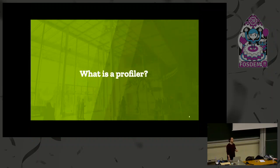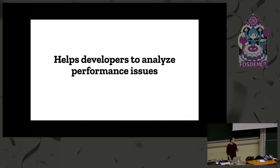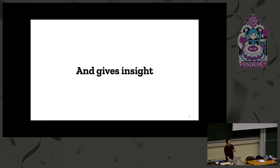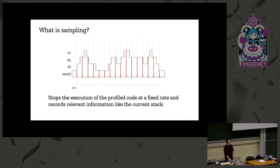We should first learn what a profiler is. A profiler essentially helps the developer to analyze performance issues and gives insight into how the program works. It does that by sampling the program — stopping the execution at a fixed rate, for example every one millisecond, and recording relevant data such as the current call stack, then resuming the program.